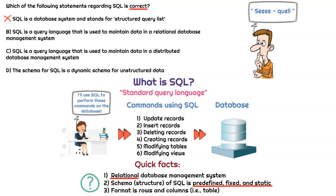How about: 'SQL is a query language that is used to maintain data in a relational database management system'? It is a query language, and it is used to maintain or perform commands in a relational database management system, so that statement is definitely correct. Then: 'SQL is a query language that is used to maintain data in a distributed database management system' — the first part is correct, but SQL is not for distributed database management systems, only relational ones. So that option is incorrect.